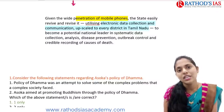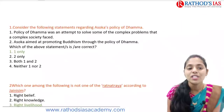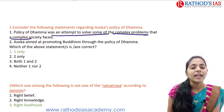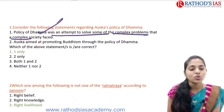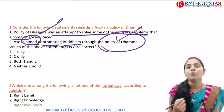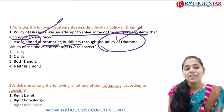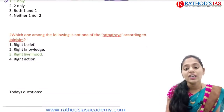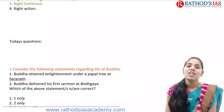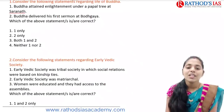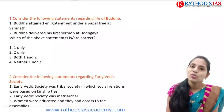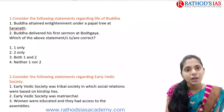Now let us see yesterday's questions. Regarding Ashoka's policy of Dhamma: the policy was an attempt to solve complex problems that a complex society faced — this is correct. Ashoka aimed at promoting Buddhism through the policy of Dhamma — this is incorrect, as he did not want to promote Buddhism through it. So the answer is statement one only. Regarding Ratnatraya — right livelihood is one of the meanings. Today's questions are on Buddha and early Vedic society — please read the statements and give your answer in the comment box.